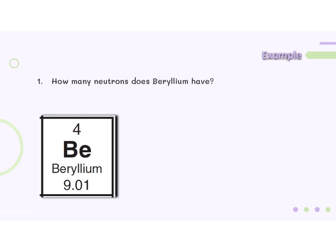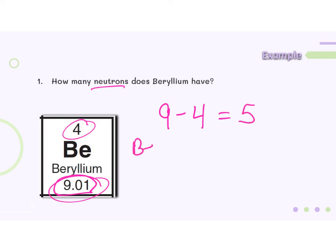This question is how many neutrons does beryllium have? We can get the number of neutrons by taking the atomic mass and subtracting from it the atomic number. So rounding the atomic mass, 9.01 rounds to the closest whole number of 9. Subtracting the atomic number: 9 minus 4 is 5. So beryllium has five neutrons.